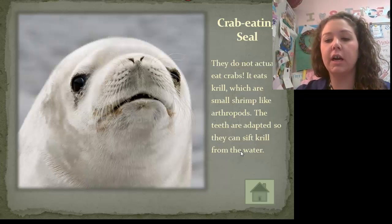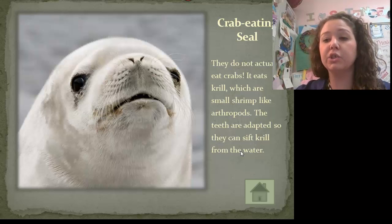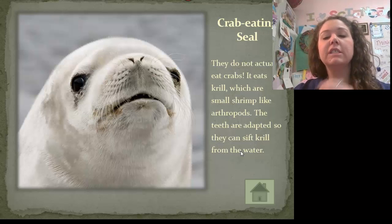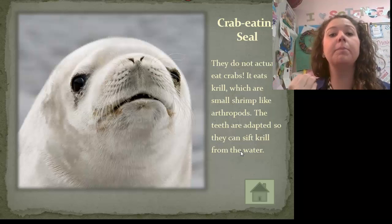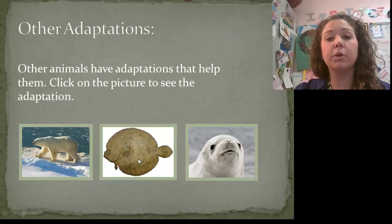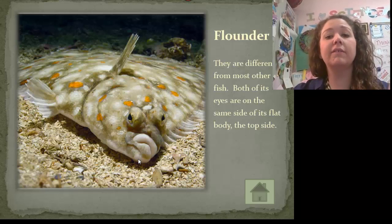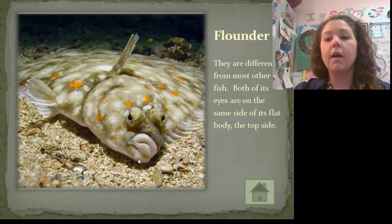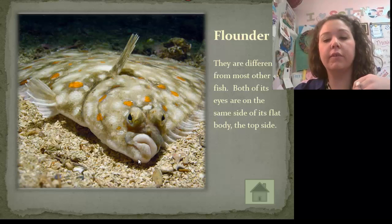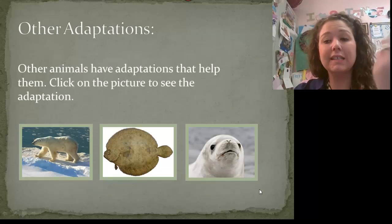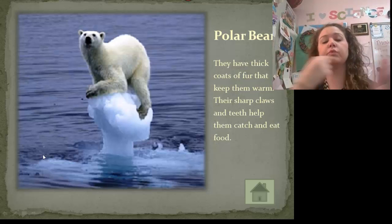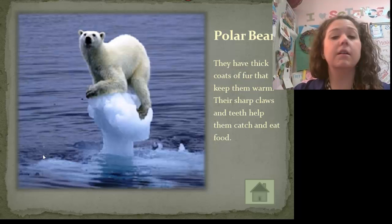Let's look at our sea lion here. A lot of people think they eat crabs, but they actually eat krill — very small shrimp. Their teeth are adapted so they can sift krill from the water. Write down teeth — different organisms have different shaped teeth to help them hunt their prey. Also look at this flounder: it has eyes on the same side of its body, on the top, allowing it to see its surroundings better and hunt for food.